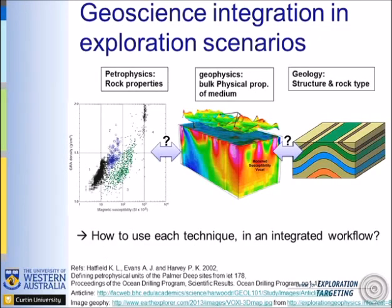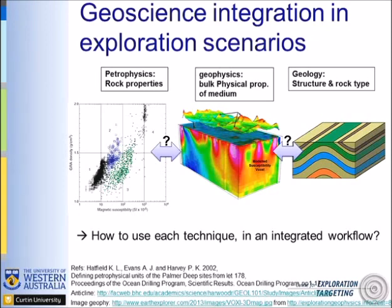These three disciplines — petrophysics, geophysics, and geology — give you different information at different scales. For example, this is a cross plot derived from a borehole in northern UK. The color gives you different rock types, so you can have the properties of rocks at specific locations. Geophysics gives you the bulk properties of the medium inferred through a physical method, not just measurements like when you look at samples. And geology mostly gives you information on rock types and the structures present in the medium you are studying.